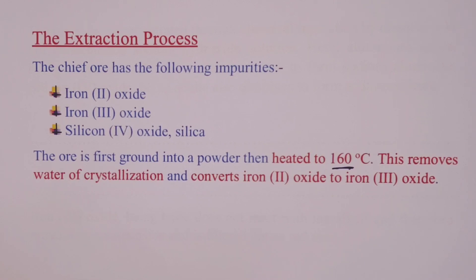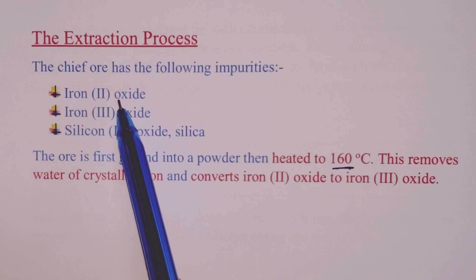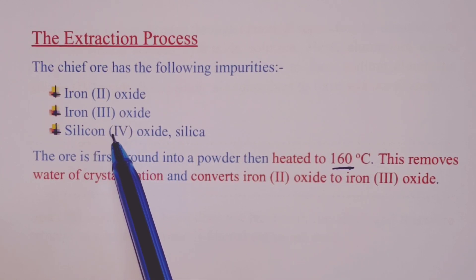This very first procedure ensures that the water of crystallization, remember our chief ore is hydrated aluminum oxide, is removed. The same procedure converts our first impurity, which is iron (II) oxide, into iron (III) oxide.